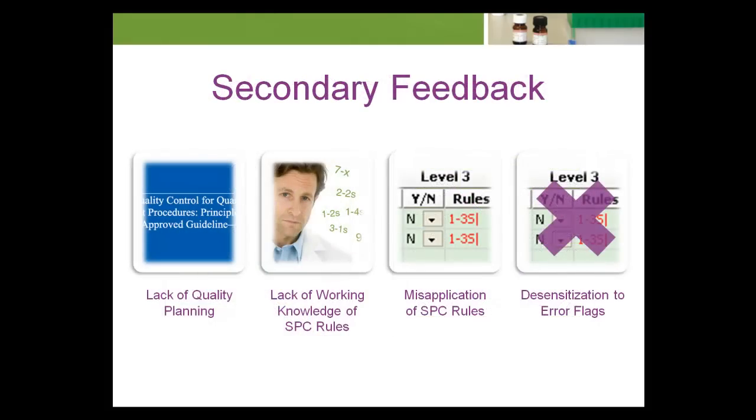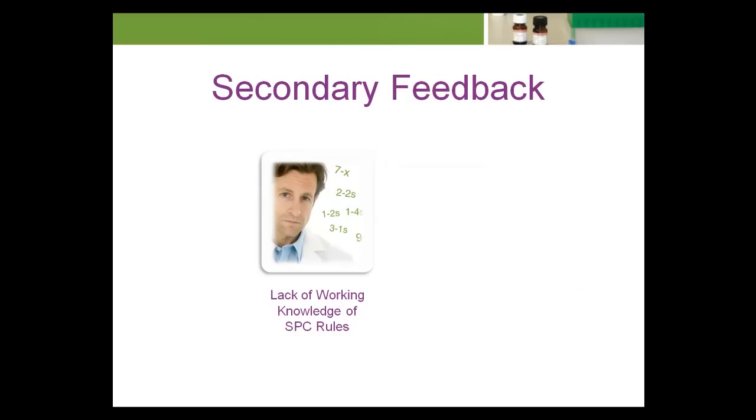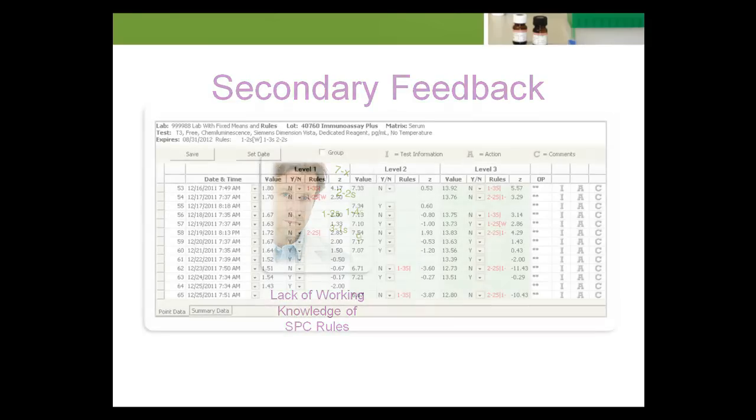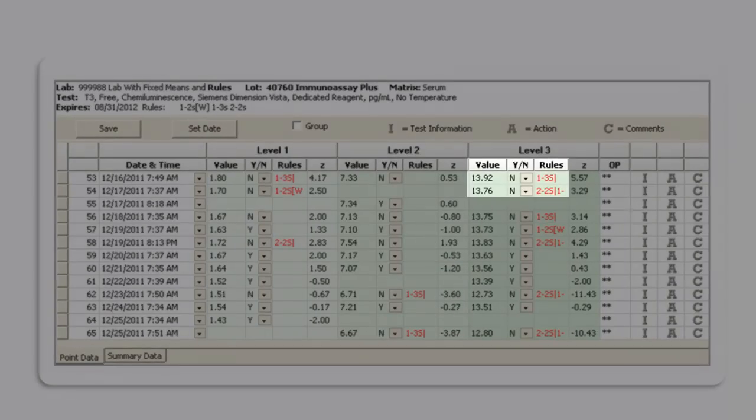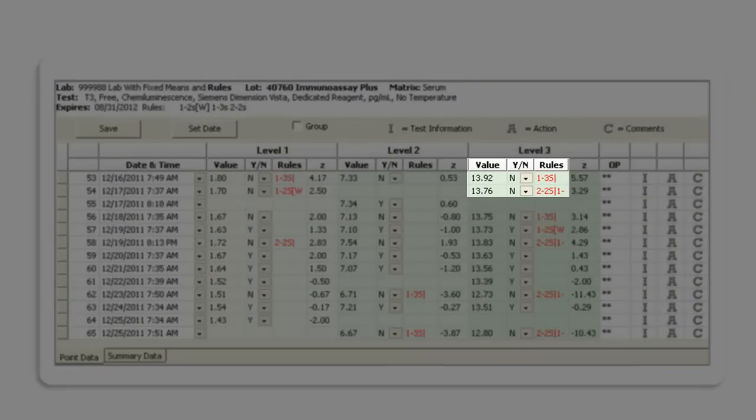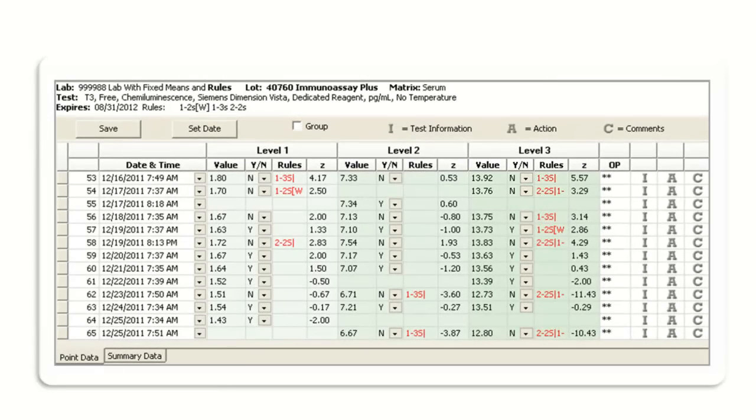Technologists are often not aware of the statistical power of each SPC rule when applied singly or in combination. Often they are also not aware that some rules identify error due to imprecision and others identify errors due to bias. Lack of a working knowledge of the SPC rules can lead to misapplication and an increase in false error flags. This results in rejection of credible patient test results that are appropriate for clinical decision making.